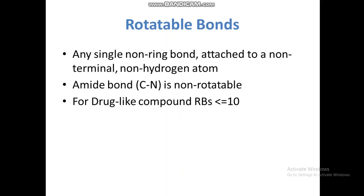A rotatable bond is any single non-ring bond attached to a non-terminal, non-hydrogen atom. For example, in a methyl group where carbon is bonded to three hydrogen atoms, those bonds are not considered rotatable bonds. However, a methyl group attached to nitrogen or another carbon is considered a rotatable bond. Amide bonds are also non-rotatable because they cannot freely rotate. For drug-like compounds, rotatable bonds should be less than or equal to 10.